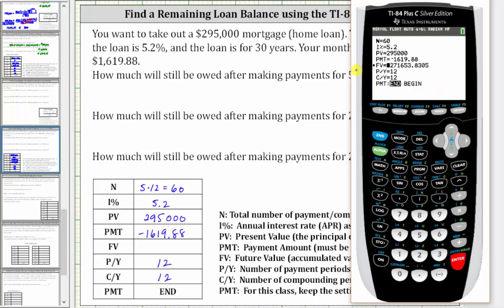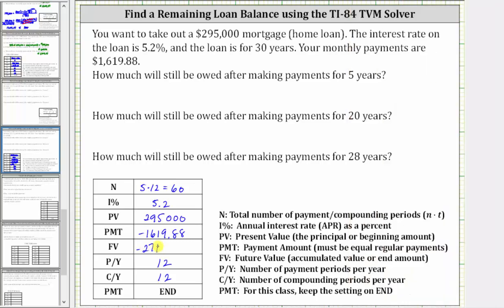Notice how the future value is negative because you still owe this amount. The future value is $271,653.83 to the nearest cent. So after making payments for five years, you still owe $271,653.83.